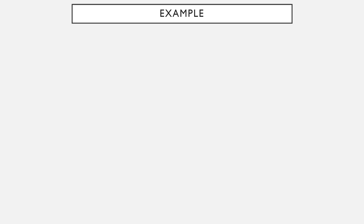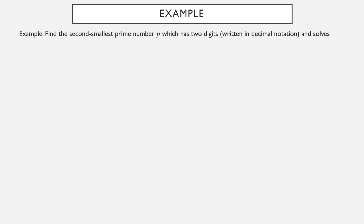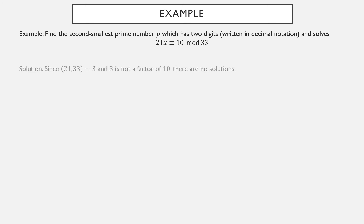One more example to close this section out: find the second smallest two-digit prime that solves 21x ≡ 10 modulo 33. Once we find all solutions, we look for two-digit primes and find the second smallest. However, the GCD of the coefficient 21 and 33 is 3, which is not a factor of 10, which means there aren't any solutions at all. So while this looked like it may have been a pain to get through, there are in fact no solutions, making it a pretty easy one to finish.